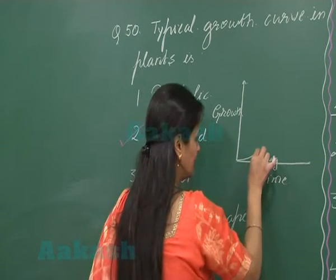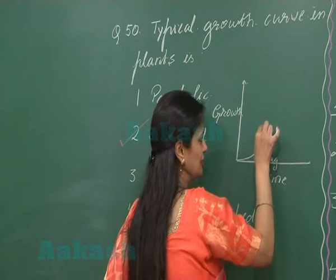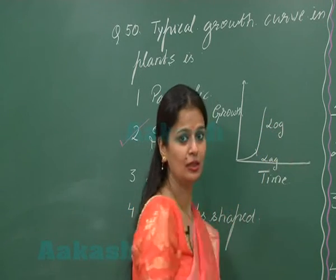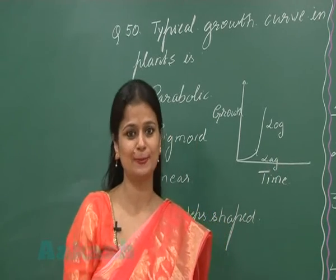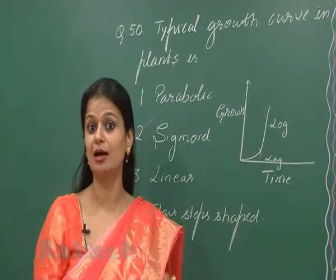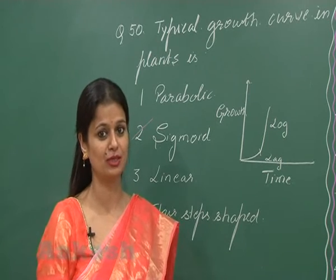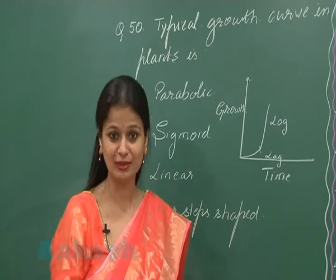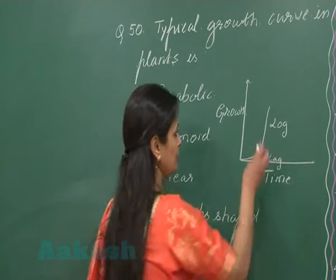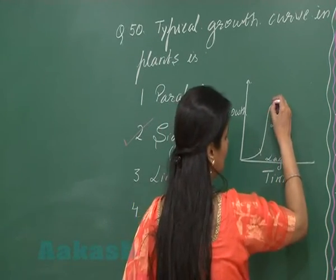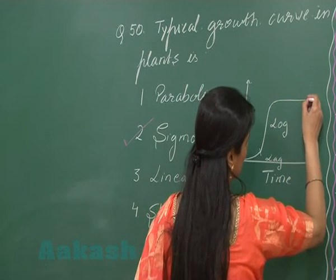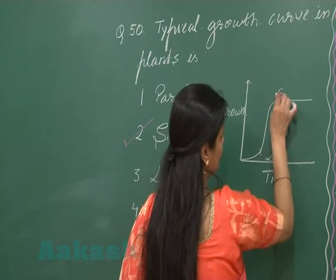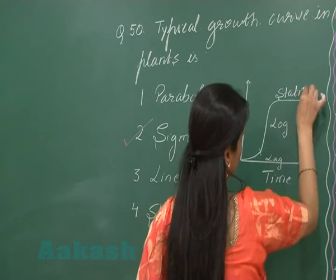Then there is an exponential increase in growth — this is the log phase. The resources present in the environment are limited, and due to these limited resources, the growth slows down.